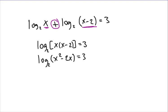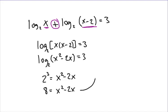A logarithm is equal to its exponent, so what I've got is 2 cubed equals x squared minus 2x. It's going to be a quadratic equation. I've got 8 equals x squared minus 2x, so to finish this out, I'm going to move the 8 over to the other side and have an equation that looks like x squared minus 2x minus 8 equals 0.